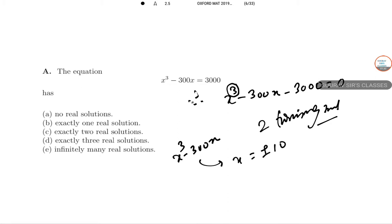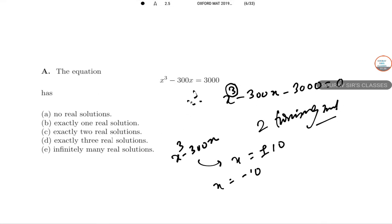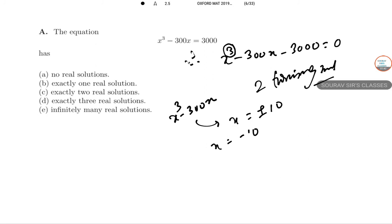At x = -10, the cubic has a value like -10³ - 300×10, which is -1000 - 3000, giving you -4000. Wait, let me recalculate: -10³ is -1000, minus 300×(-10) is +3000, so -1000 + 3000 = 2000. Since the RHS is 3000, which is greater than 2000, there can be only a single root of the equation.